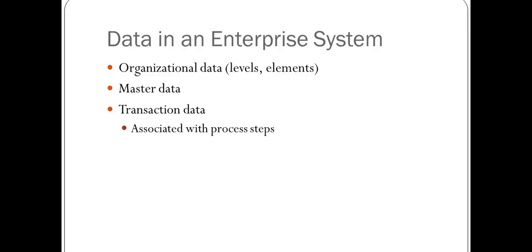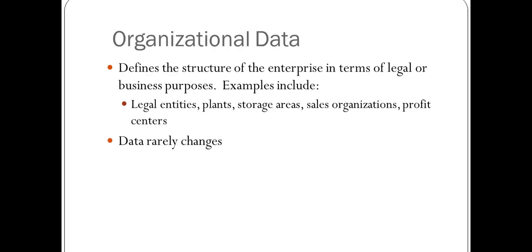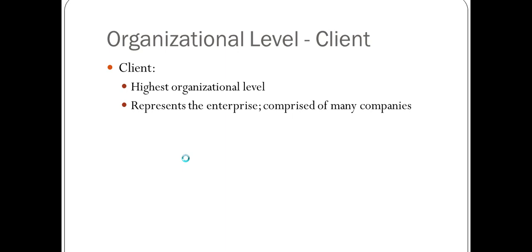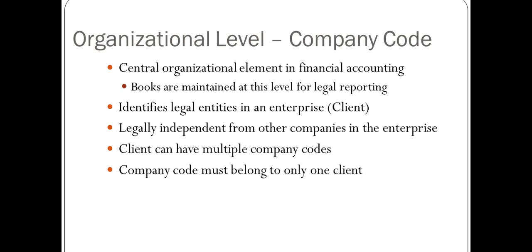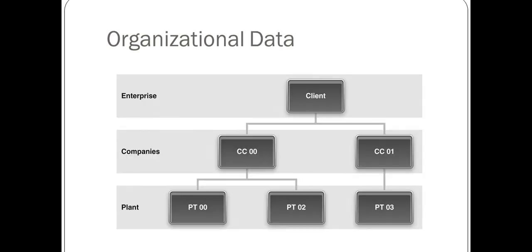One of the key things to take away from this chapter is the three types of data within SAP: organizational data, master data, and transaction data. Organizational data defines the structure of the organization and includes legal entities, plants, storage areas, sales organizations, and profit centers — this data rarely changes. At the top of the organizational level is the client, representing the entire enterprise, followed by the company code, then the plant.